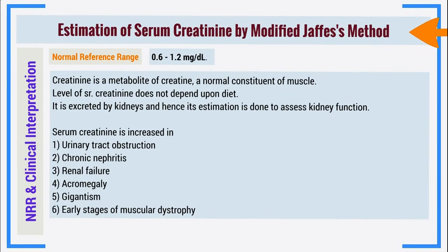The serum creatinine obtained is 2.14 mg/dL. The normal reference range is 0.6 to 1.2 mg/dL, so this value is above the upper limit of the normal reference range. Causes of increased serum creatinine levels include urinary tract obstruction, chronic nephritis, acute or chronic renal failure, acromegaly, gigantism, and early stages of muscular dystrophy.